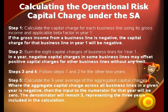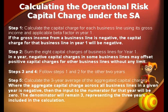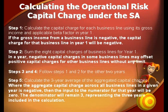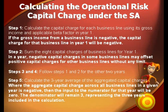Step number five: calculate the three-year average of the aggregated capital charges. Remember, where the aggregate capital charge across all business lines in a given year is negative, then the input to the denominator for that year will be zero. The denominator will remain three, representing the three years included in the calculation.